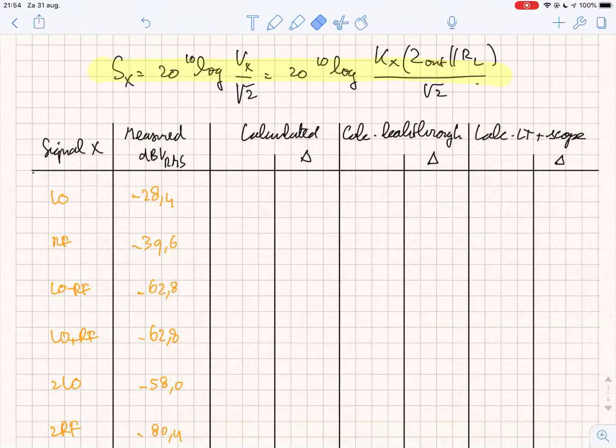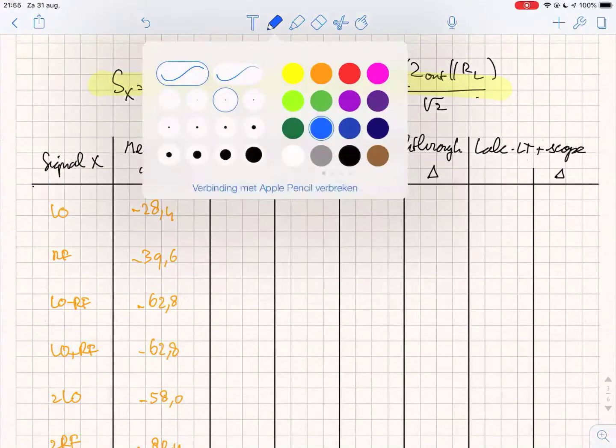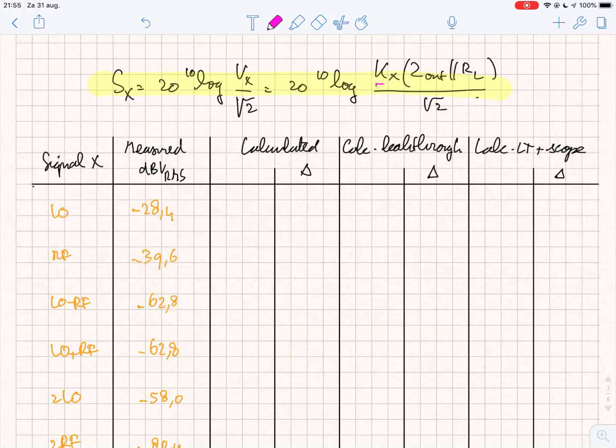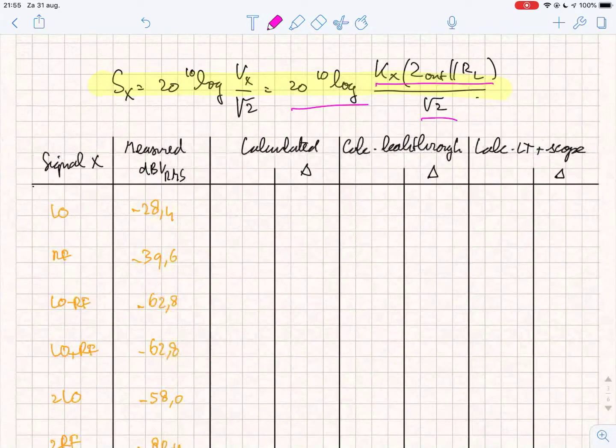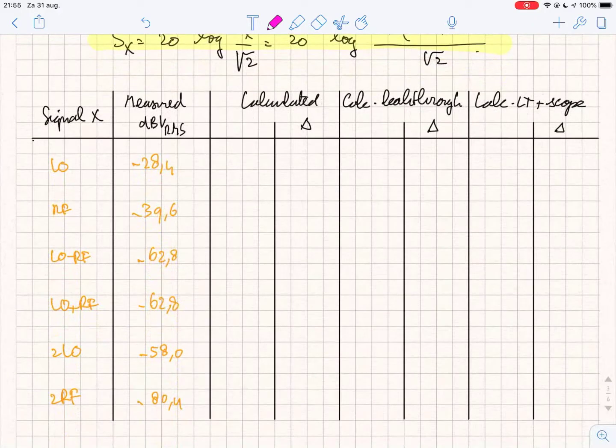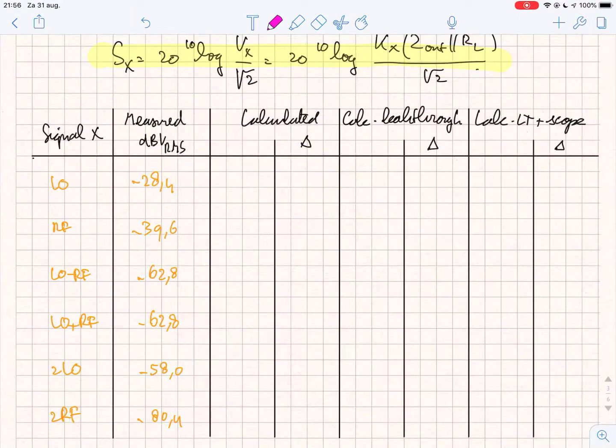This is a table for the measured signals at the output. And I can also put the calculated values in it. The calculated values from the model which I presented earlier give a signal strength in current which should be translated to voltage by multiplying the current with the load, divided by square root of 2 to give RMS voltage, and convert it to decibels. Of course I made a simple spreadsheet for this to calculate the signal strength in decibel.